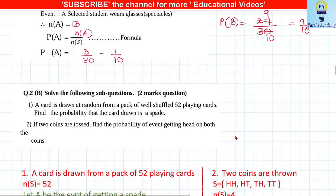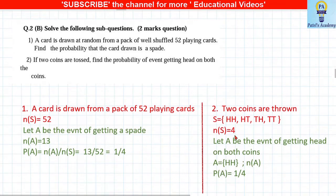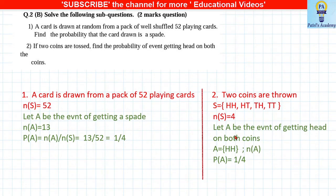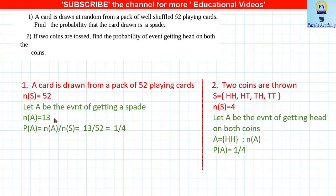A card is drawn from a pack of 52 playing cards; nS = 52. Find the probability that the card drawn is a spade. There are 13 spade cards, so nA = 13. P(spade) = 13/52 = 1/4.